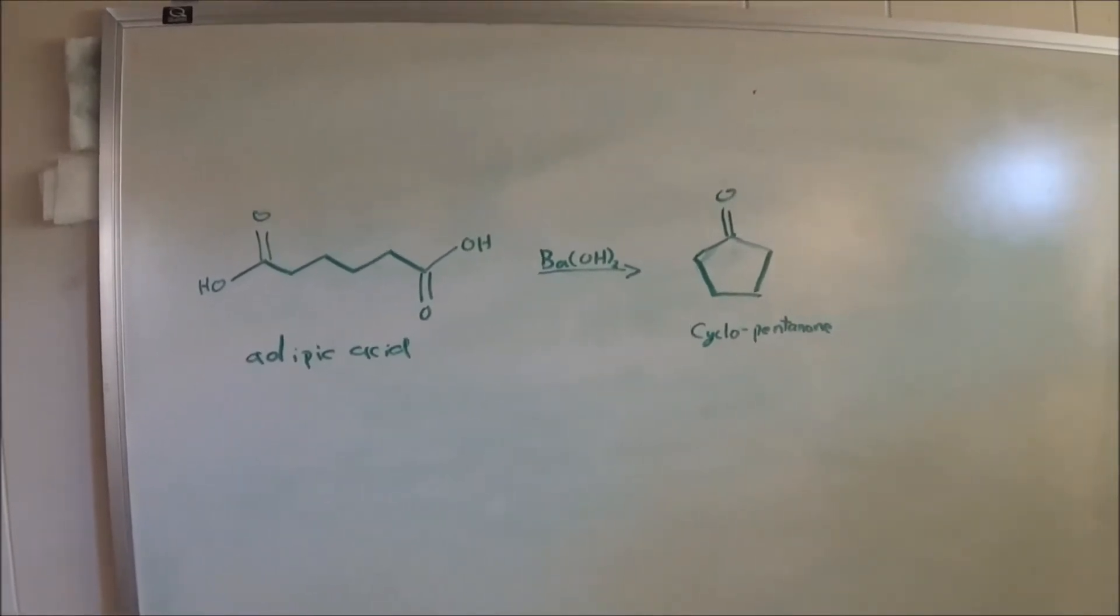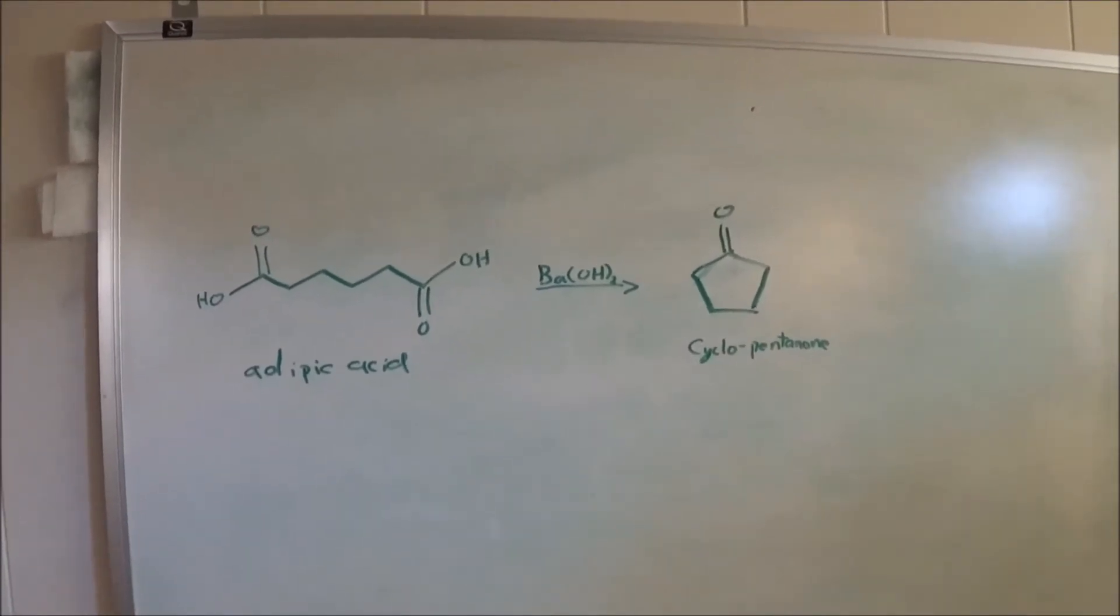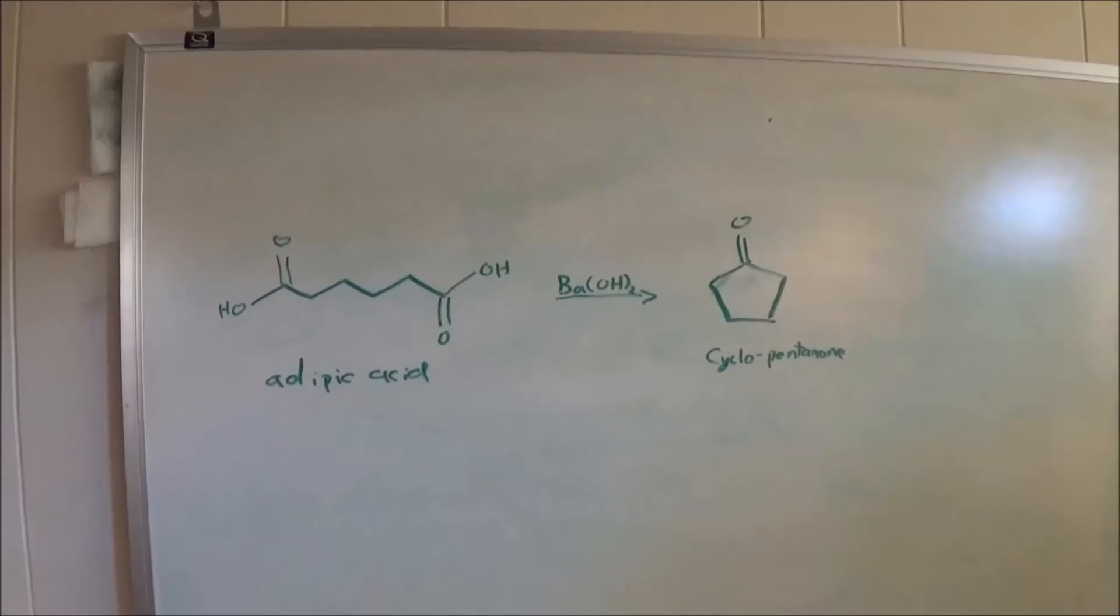This is actually another example of a ketonic decarboxylation, but in this case, the two acid groups are on the same molecule, producing a cyclic compound.